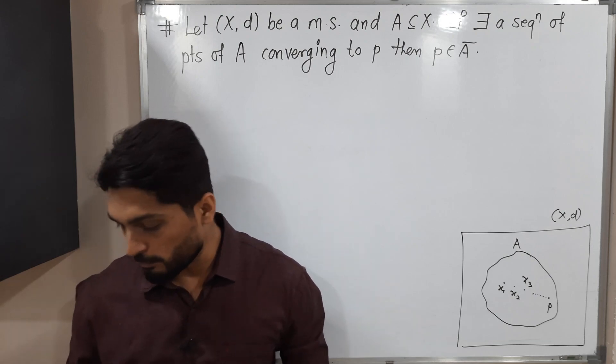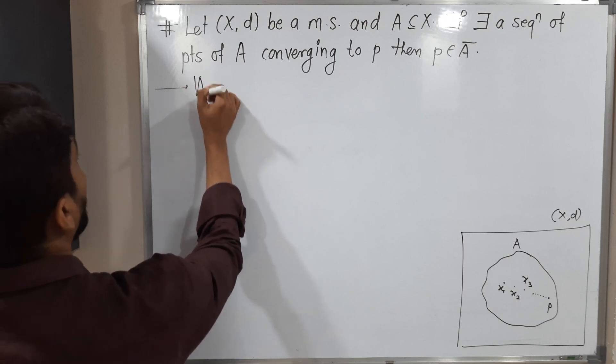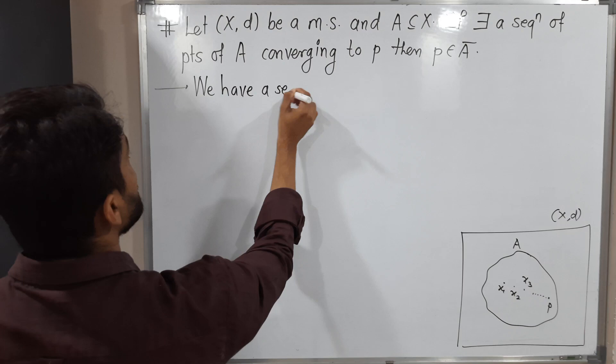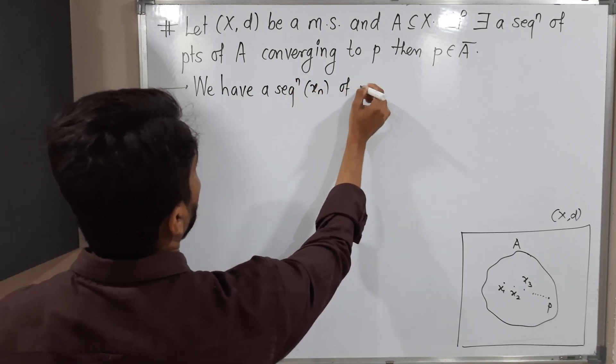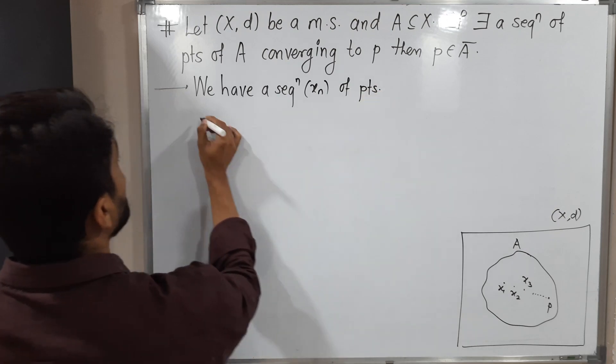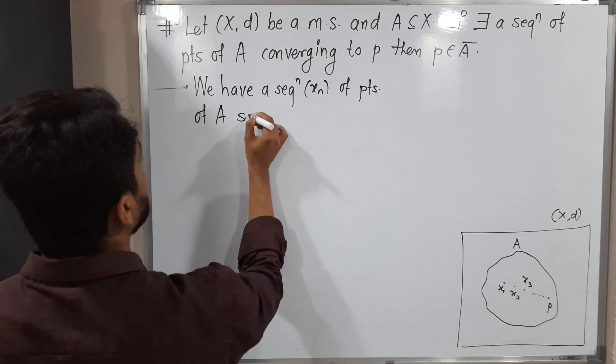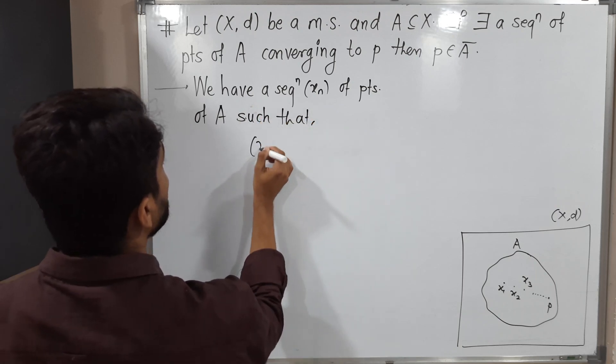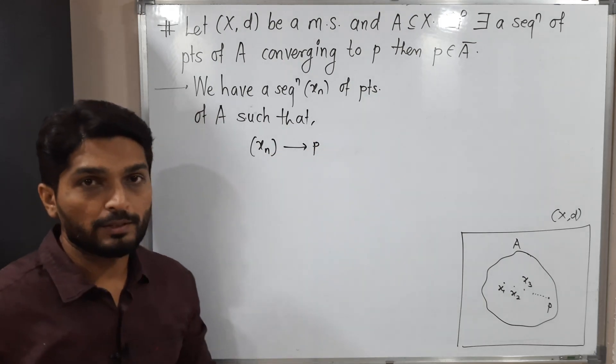So let us start with the given information. Let me write. We have a sequence, we are calling it xn, of points of A such that xn converges to P.